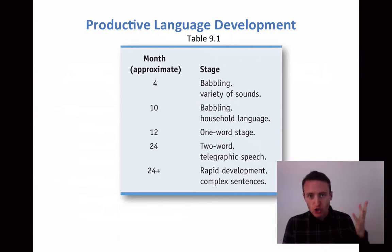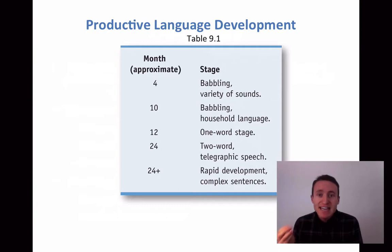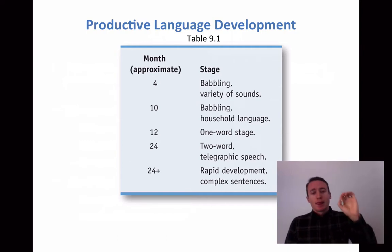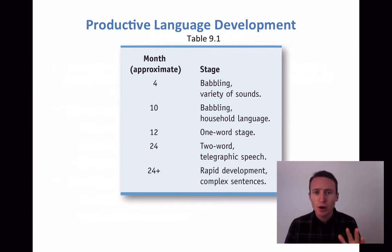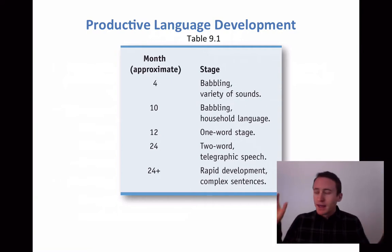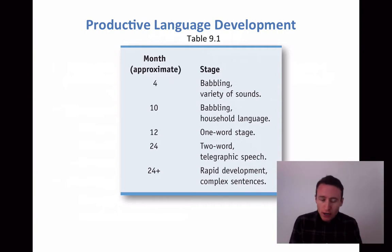By about age one, or 12 months, children might start to enter the one-word stage. We'll come back to that — how do we go from babbling to actually producing meaningful words like 'mama' or 'dada'? By two years of age, children start to speak in sentences, but they're very basic, rudimentary — two words at most. A child might say 'want juice' or 'go car.' Typically, a child needs a vocabulary of about 200 words before entering this two-word telegraphic speech stage.